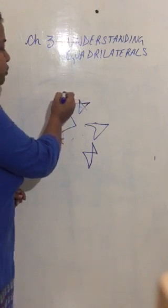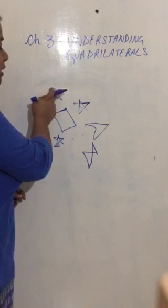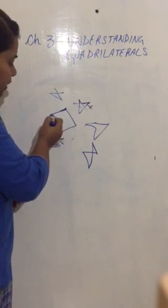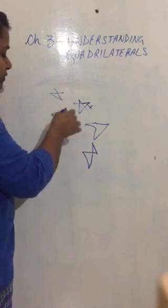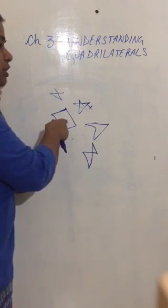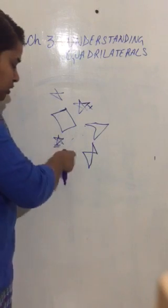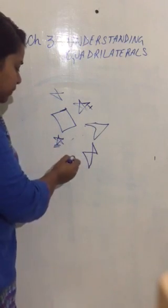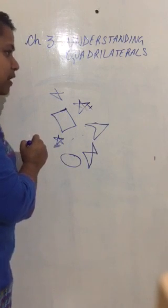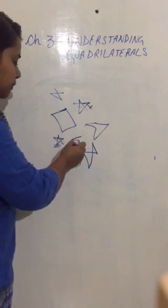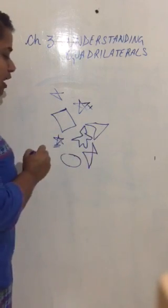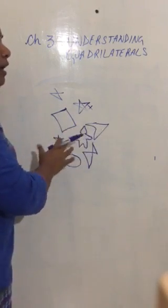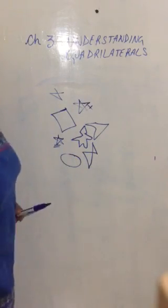Children, see here — when I was drawing this, I intersected while going. So this cannot be called a simple closed curve. Here, I started from here, went here, and I am not intersecting the previous drawings — so this is a simple closed curve. This one cannot be called a simple closed curve because I am intersecting and overlapping with this line. But this is a simple closed curve, and this is a simple closed curve, because none of the points are overlapping or cutting any of the lines.